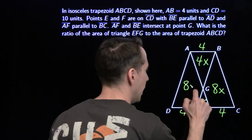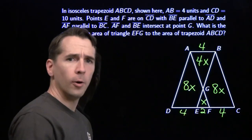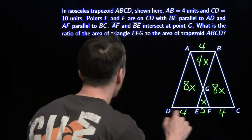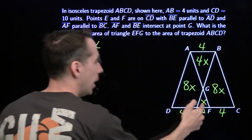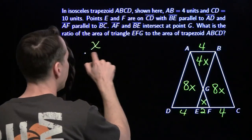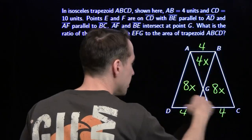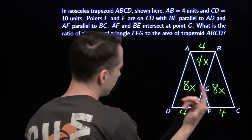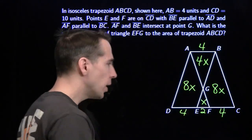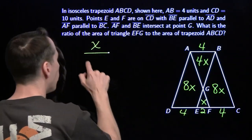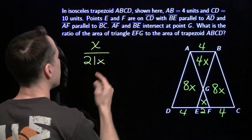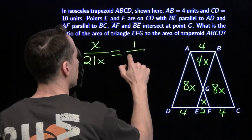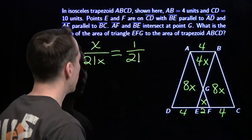The whole thing is 9x, which means this piece is 8x. And this piece will be 8x too — it's got the same thing going on over here. And now you're all set. Little triangle: area is x. For the entire trapezoid ABCD, we just add it all up: 4x, 8x, that's 12; 12 and 8 is 20; add that one more x we got — x over 21x gives us 1 over 21.